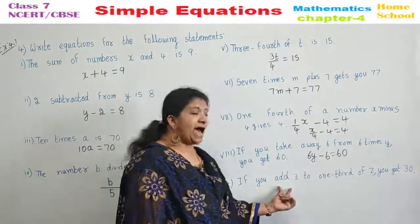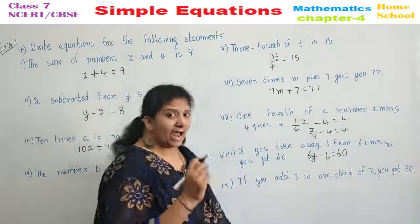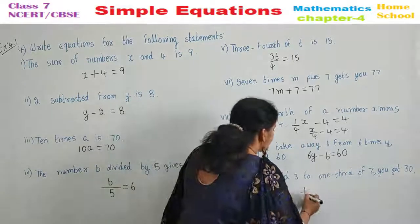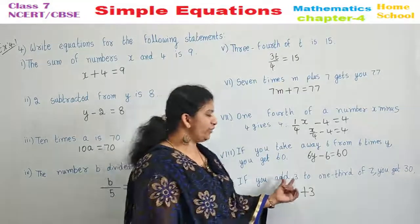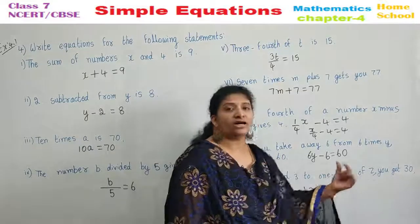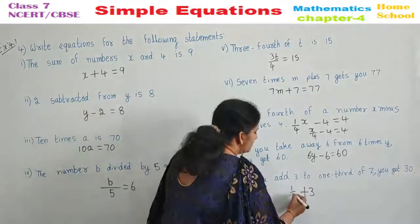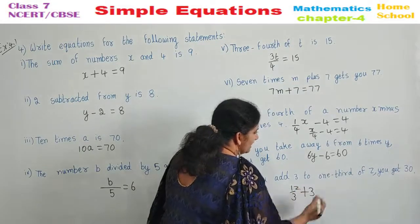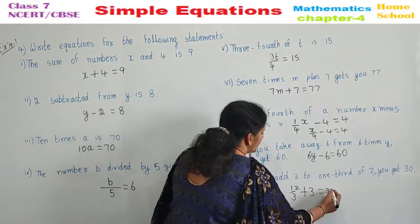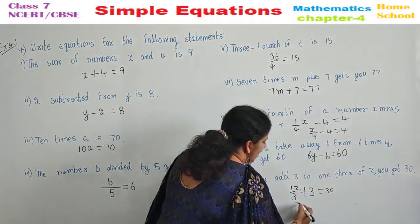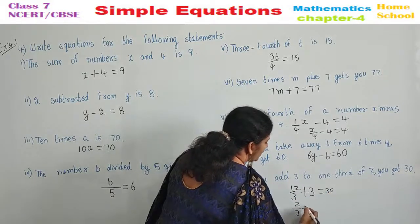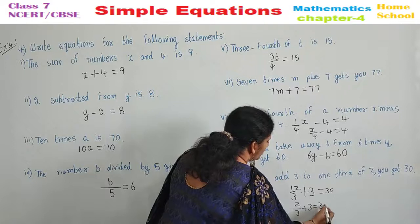Last one in this problem. If you add 3. Add 3. Plus 3 you remember. Add 3 to 1 third of Z. 1 third of Z means 1 by 3 Z. You get 30. You may rewrite this as Z by 3 plus 3 equal to 30. This is the way we need to frame the equations.